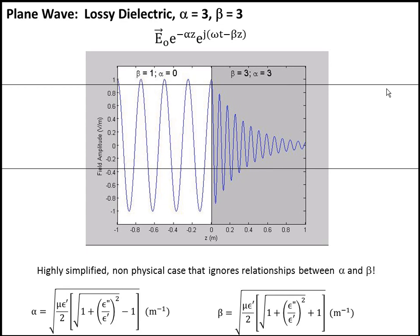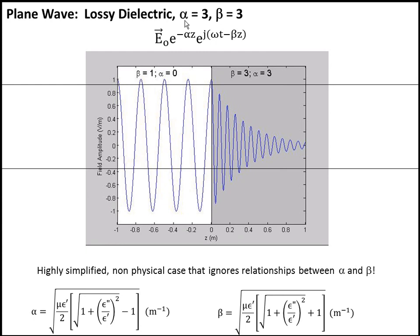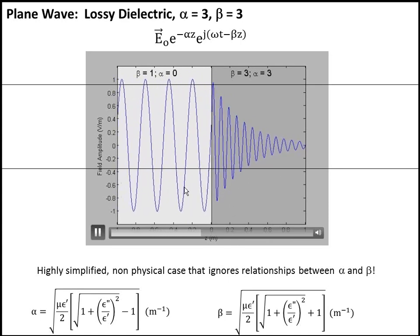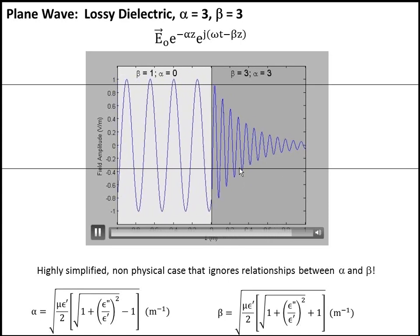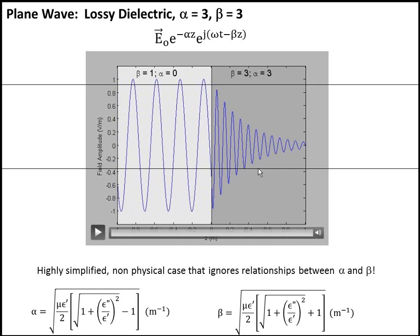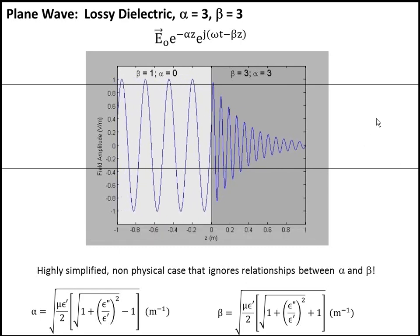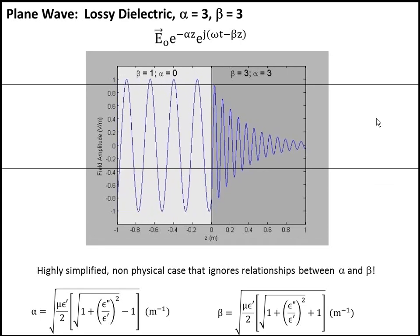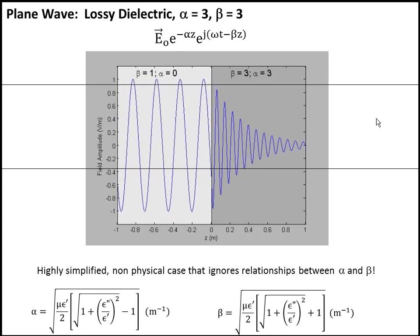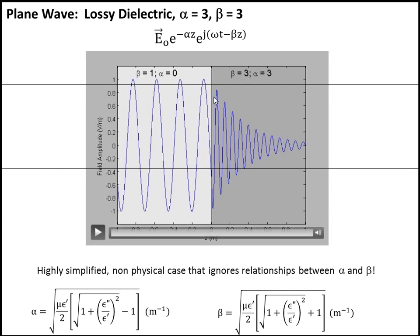In the combined case of alpha equal to 3 and beta equal to 3, you get both exponential decay away from the surface and spatial compression due to the high beta. The wavelength squishes down and becomes much smaller, the wave decays exponentially, and the phase propagates differently through the material. Note again that this is a simplified non-physical illustration — in reality alpha and beta are strongly related through the real and imaginary parts of the complex permittivity — but it demonstrates the same types of behavior.